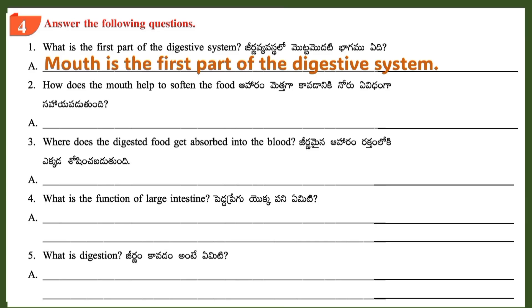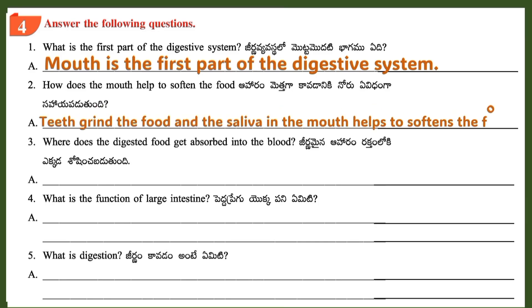Question 2: How does the mouth help to soften the food? Answer: Teeth grind the food and the saliva in the mouth helps to soften the food.